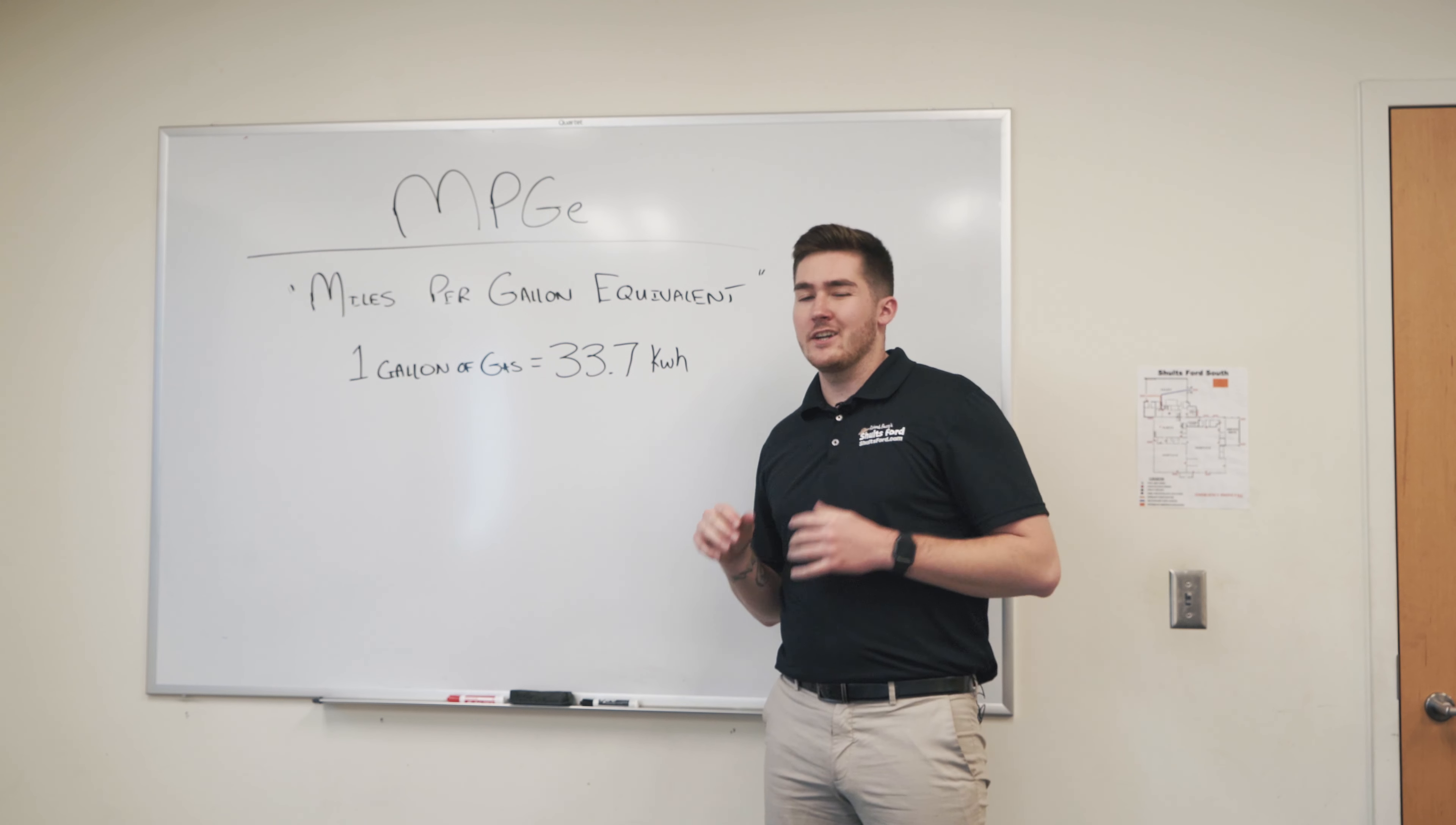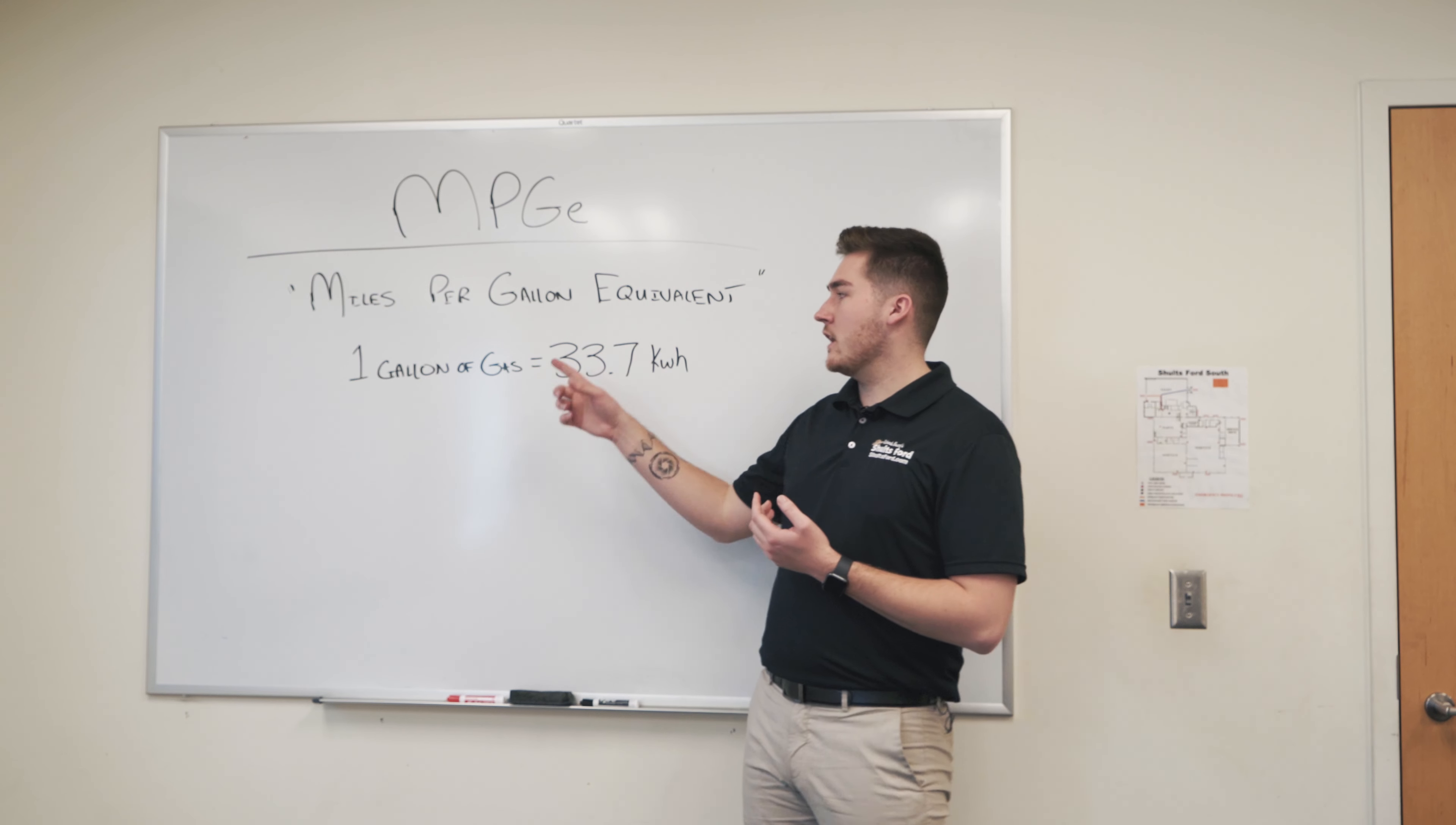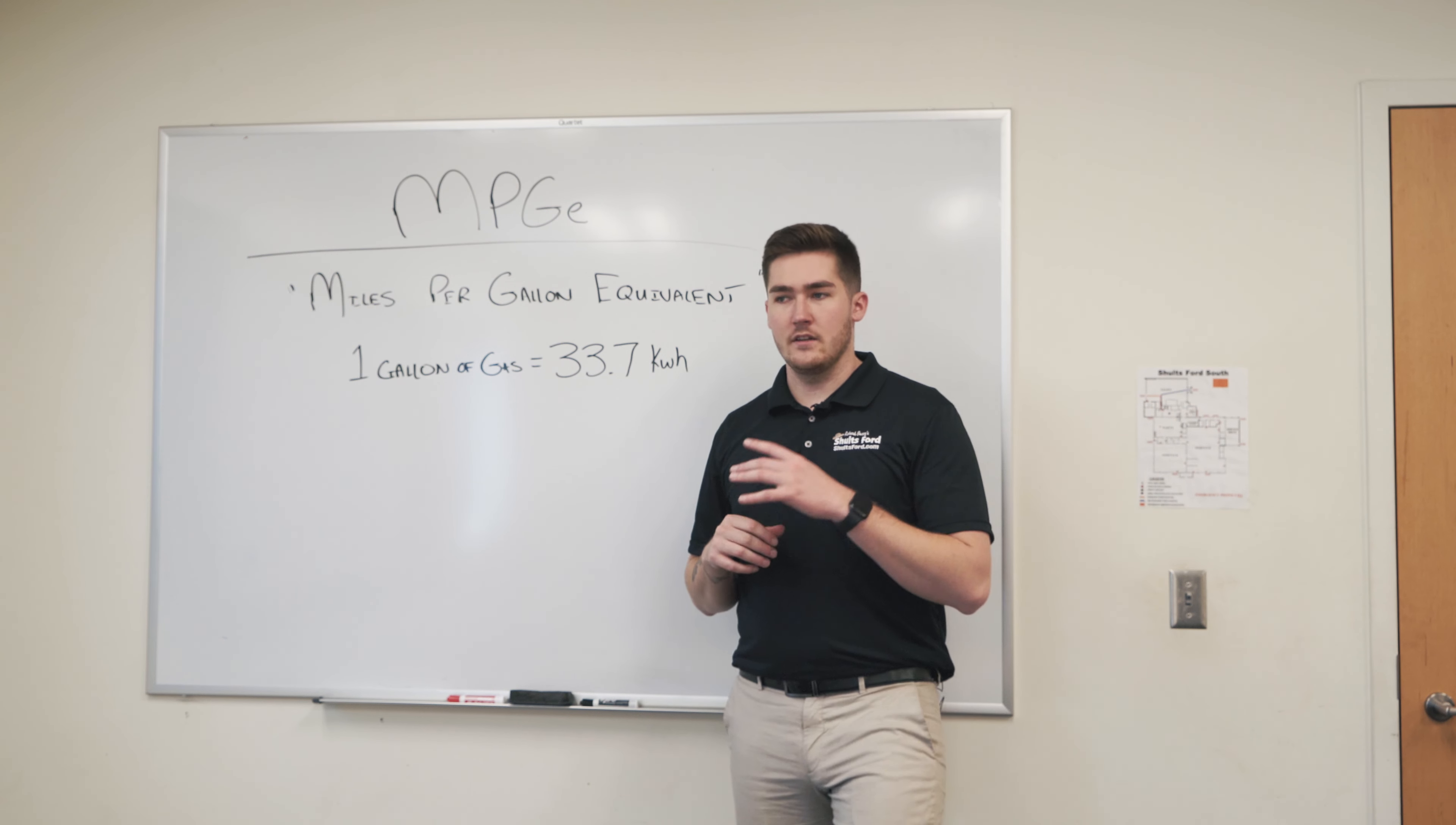This one's going to be real quick. I just want to go over what an MPGE is. So you'll see it on the window sticker. MPGE means miles per gallon equivalent. So the EPA has rated that one gallon of gas in a regular ICE or internal combustion engine is equal to about 33.7 kilowatt hours of energy. So that'll become very important when we talk about the window sticker in the next part.